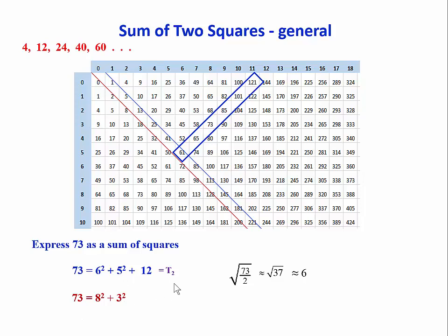And we've used two sutras here: by the deficiency, because we use that 12 to get us to the answer, and also by addition and subtraction, where we go from the 6, 5 to the 8, 3 by adding and subtracting a 2.